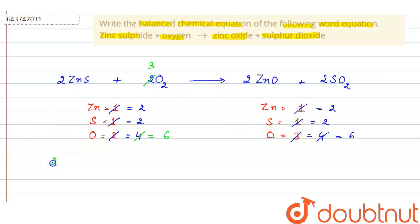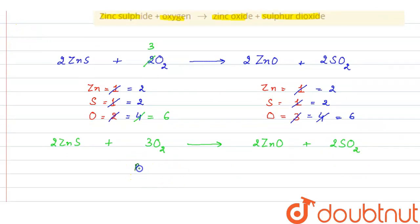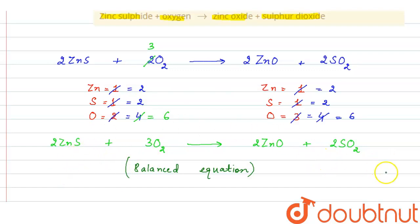The resulting balanced equation is: 2ZnS + 3O₂ → 2ZnO + 2SO₂. This is the balanced equation. As you can see, the number of atoms of each element are equal on both sides. I hope you understood the explanation. Thank you.